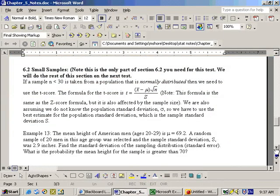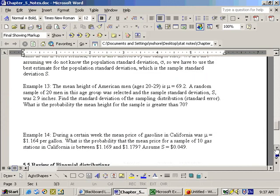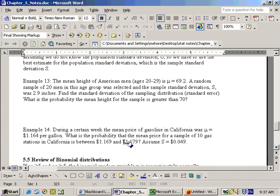It says that during a certain week, the mean price of gasoline in California was $1.164 per gallon. What is the probability that the mean price for a sample of 10 gas stations in California is between 1.169 and 1.179? And it says assume this to be the sample standard deviation right here, 0.049.